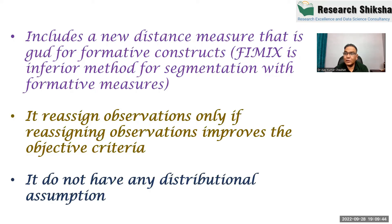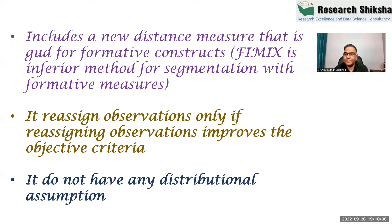FIMIX is only increasing the path coefficient — for example X to Y, X to Z — and it may be possible that one path coefficient increases while another also increases, which is a problem in FIMIX. But in POS, the benefit is that you will have a higher R square for each individual segment, so the prediction level of individual segments is very high.